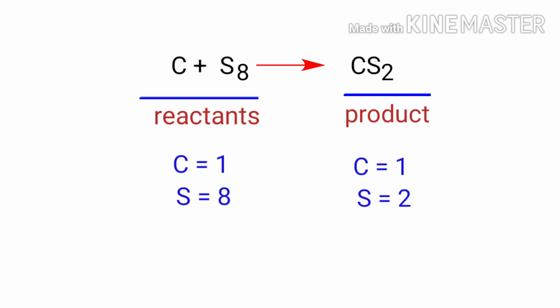If you look at this equation, the equation is not balanced. In the reactants side, there are one carbon atom and eight sulfur atoms present. In the products side, there are one carbon atom and two sulfur atoms present.